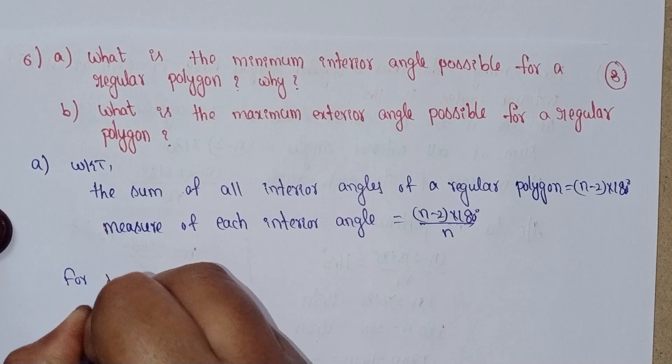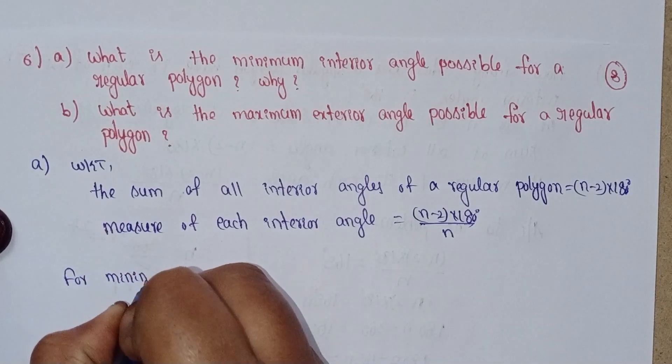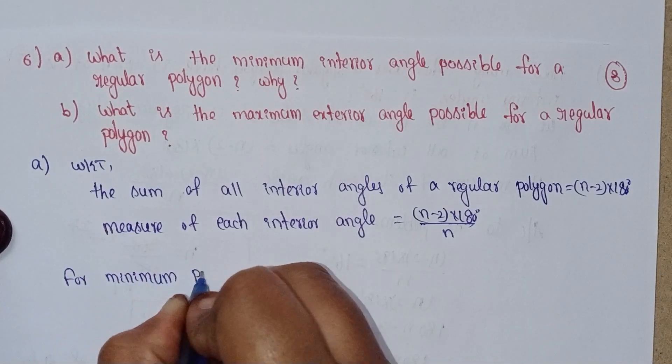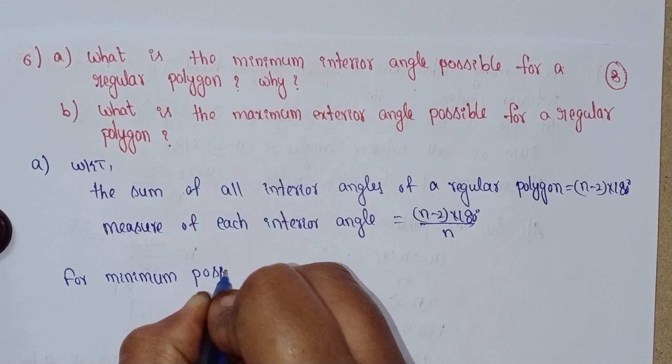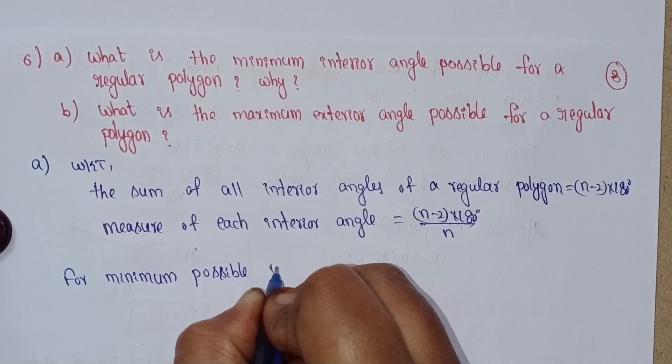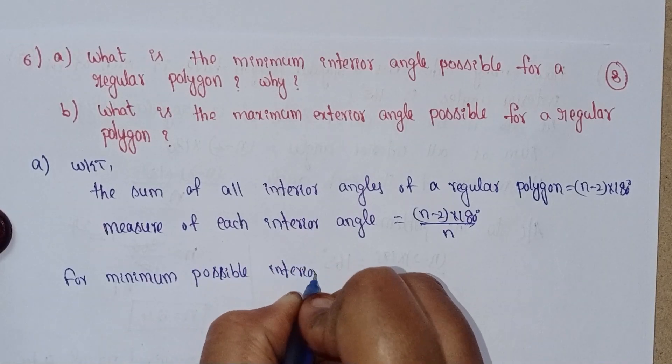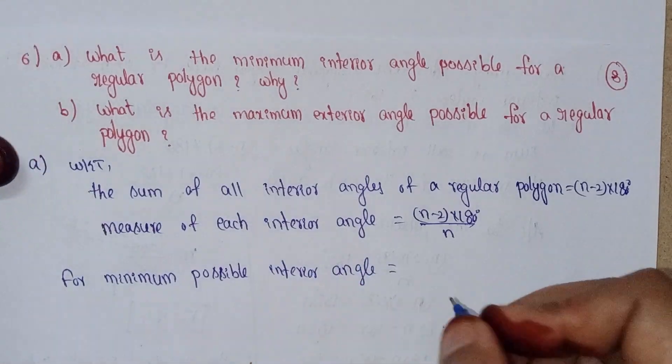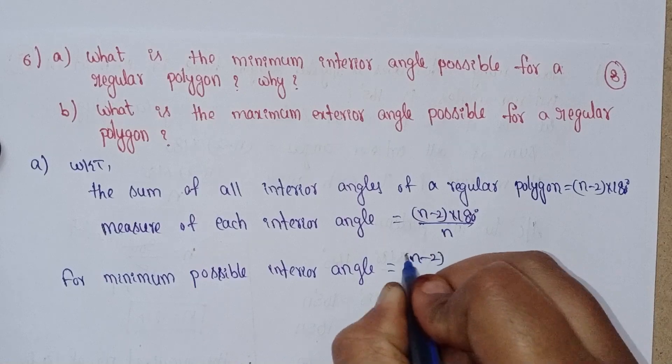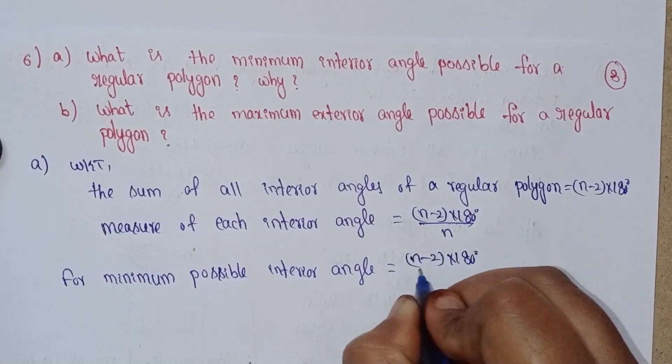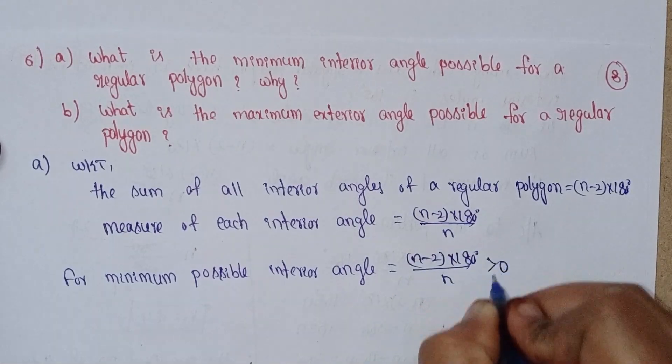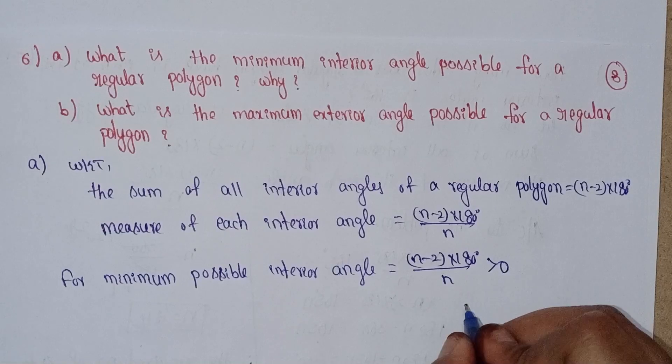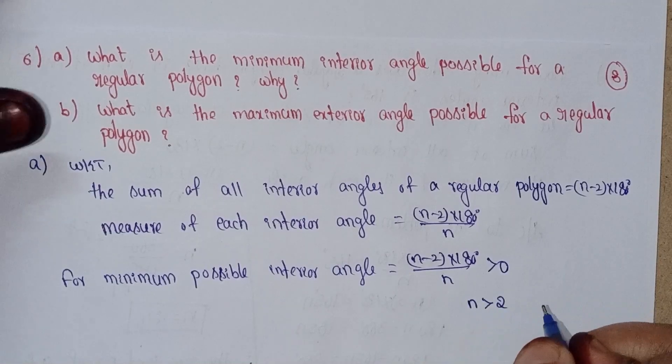For minimum possible interior angle, this angle is greater than 0. So (n-2) times 180 degrees divided by n is greater than 0. In this case, n is greater than 2.